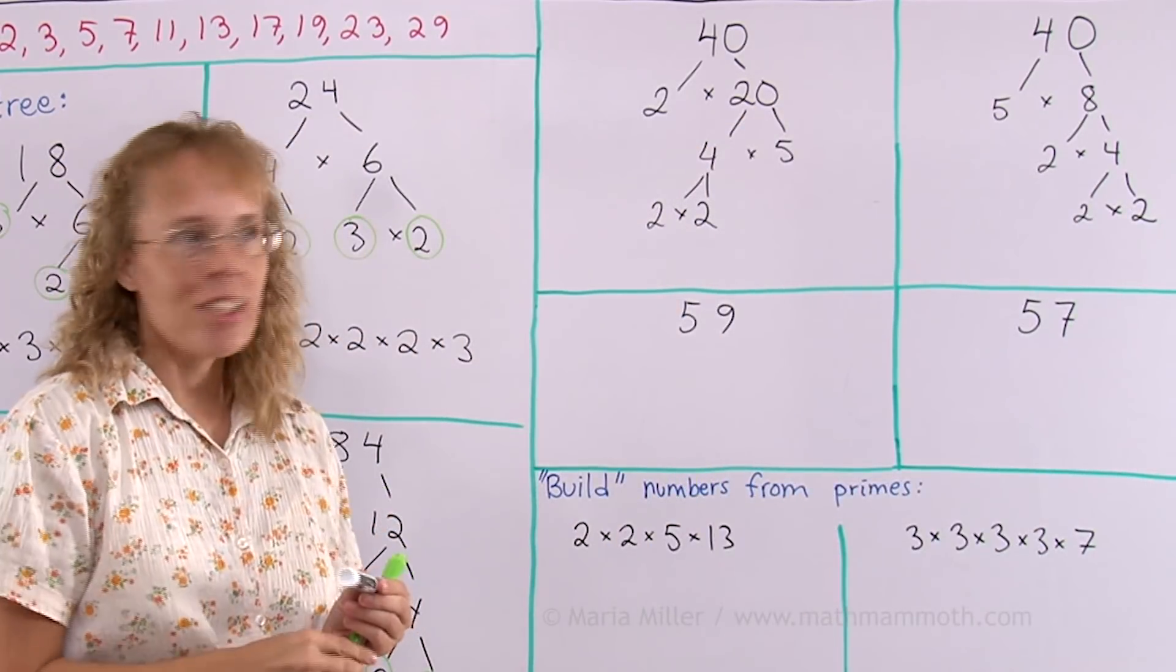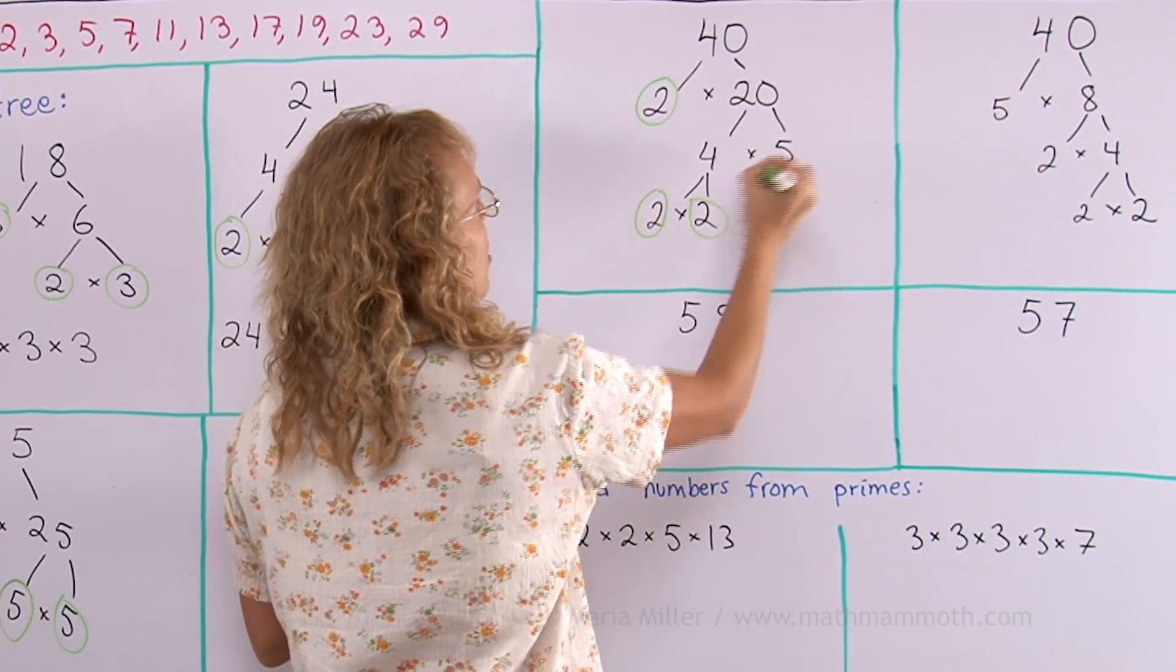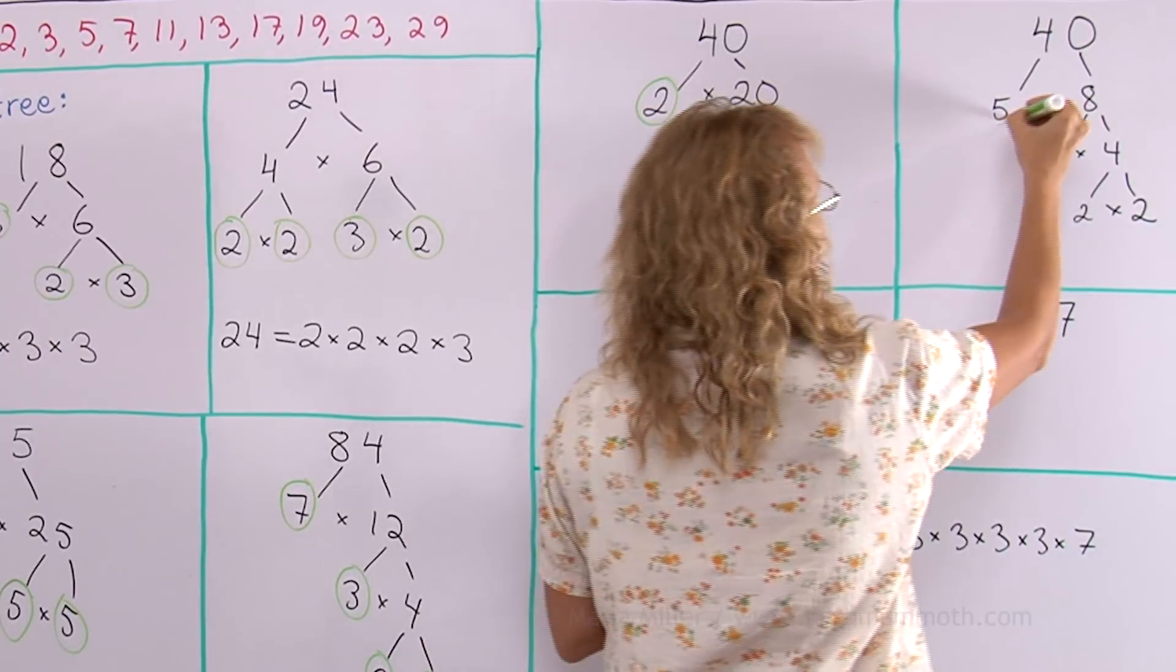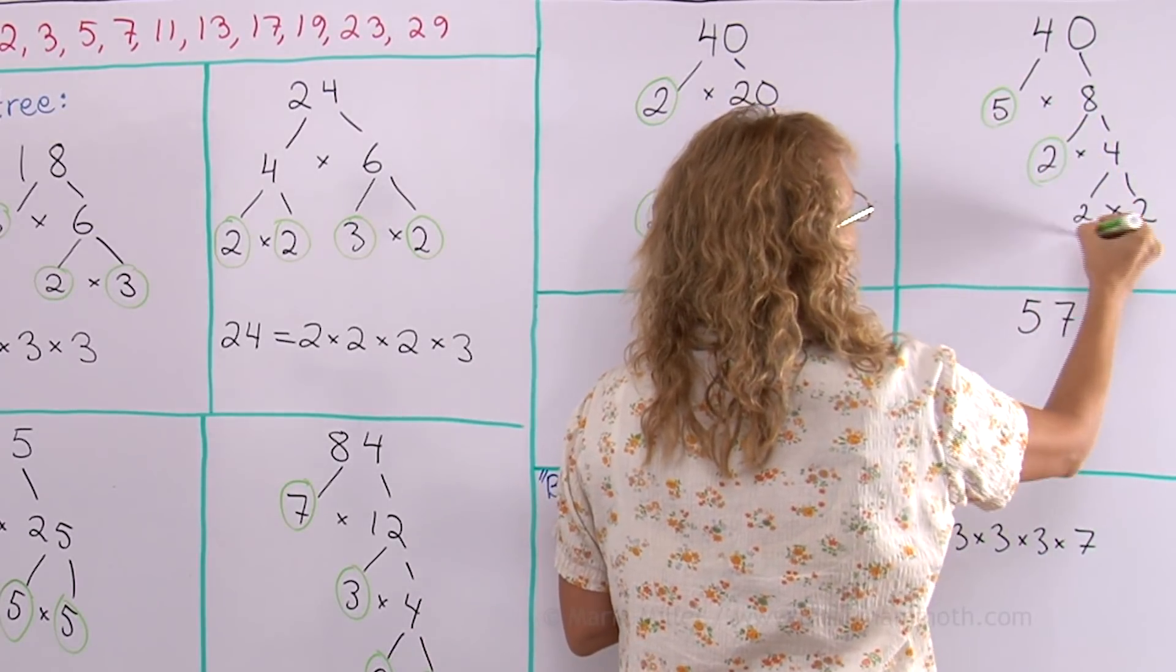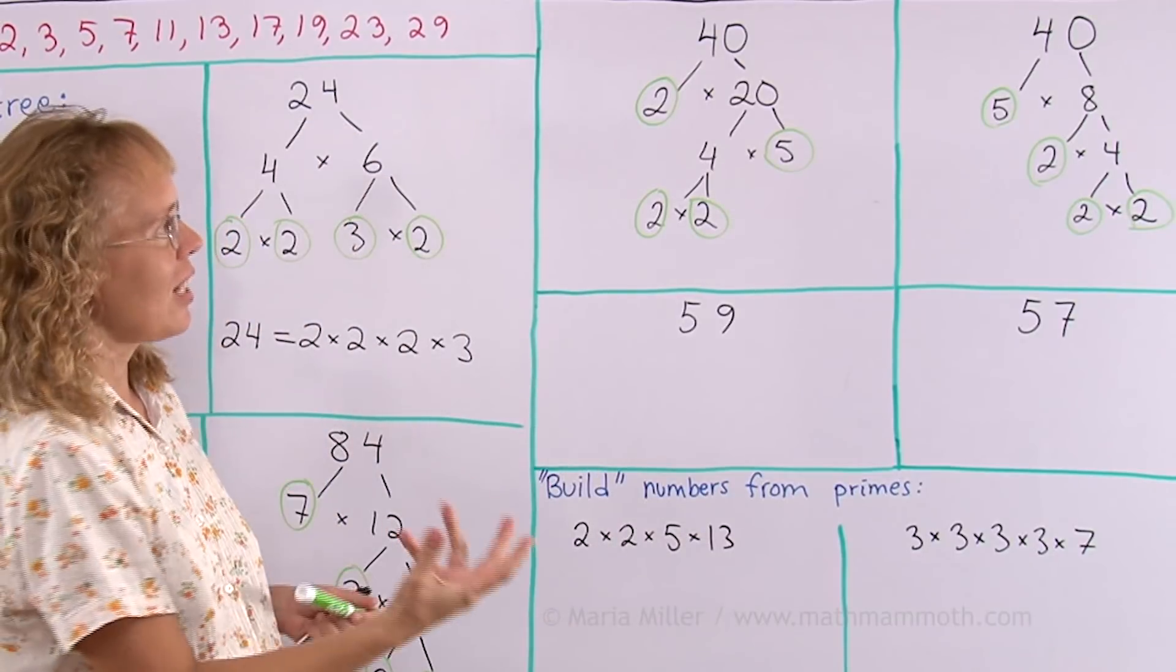The factor trees look different, but the leaves are the same, because there's 2, 2, 2, and 5. And over here, there's 5, 2, 2, and 2. So we get the same factorization.